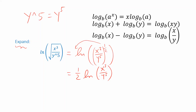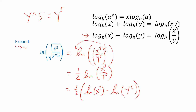Now inside the logarithm I have a quotient. The last property in my list tells me how to split that up: instead of writing natural log of x cubed over y to the fifth, I'll write natural log of x cubed minus natural log of y to the fifth. Then I use the power property one more time — natural log of x cubed becomes 3·natural log of x, and natural log of y to the fifth becomes 5·natural log of y.